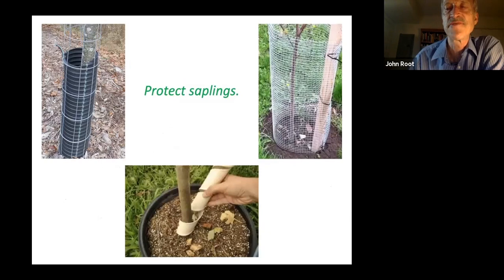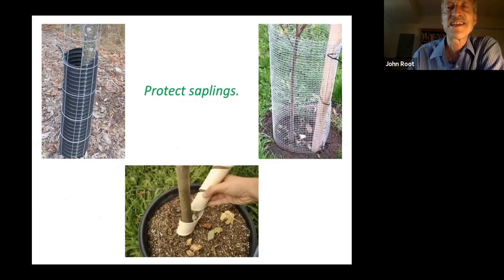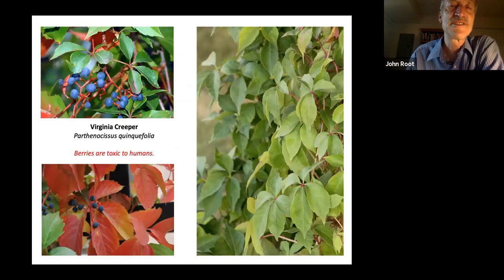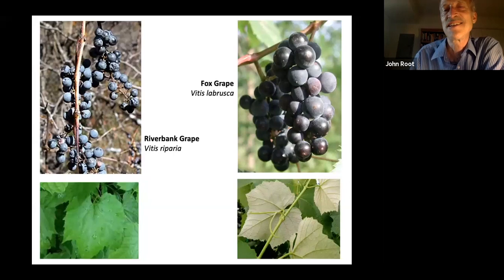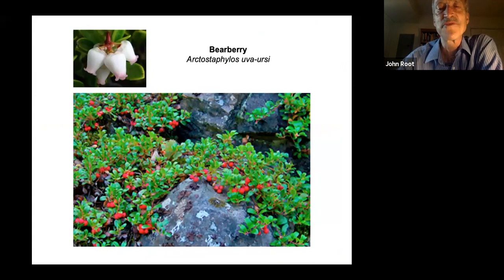You'll want to protect saplings in some cases if you know you have a lot of pressure from hungry vegetarians such as rabbits and woodchucks. Here are some devices to accomplish that. Now the other fruits that attract birds: the vine Virginia creeper — we cannot eat this fruit, but birds can. And either of these wild grape species are very appealing to birds. Wild honeysuckle, or limber honeysuckle — the mockingbird and catbird can both make use of that and also use the vines for shelter or nesting.